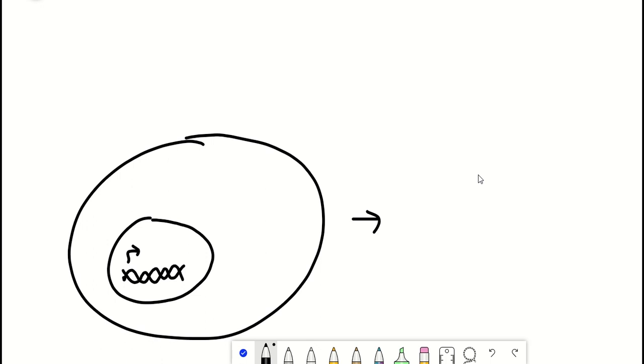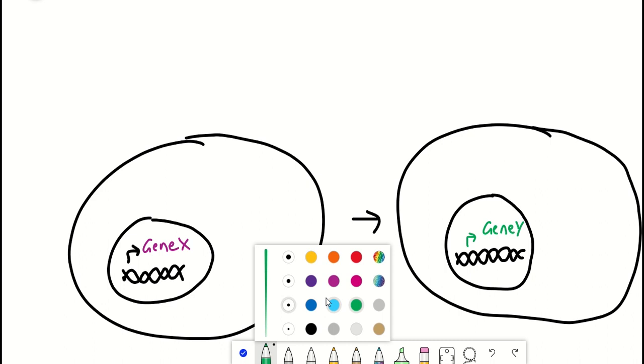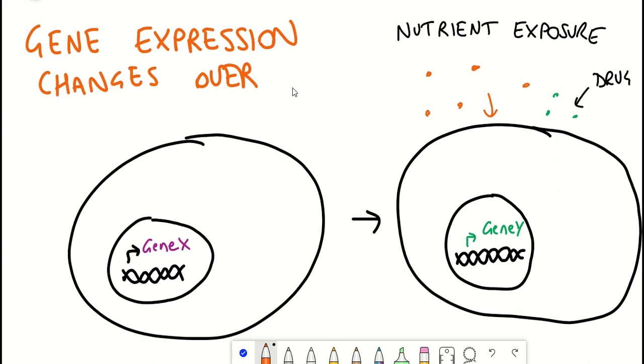They can change depending on what extracellular signals are present. This could be exposure to nutrients, exposure to a drug, or responding to different signaling molecules in the extracellular environment. Looking at what genes are being expressed by a cell gives us an understanding of what that cell is getting up to.